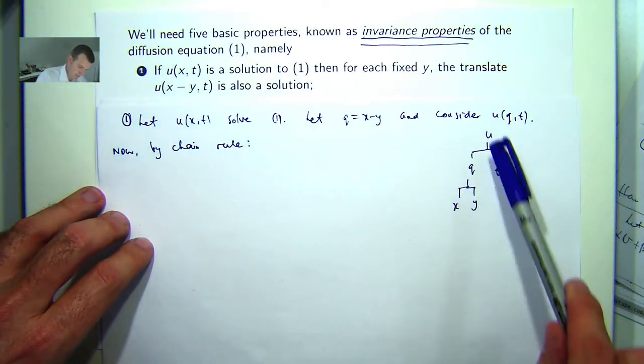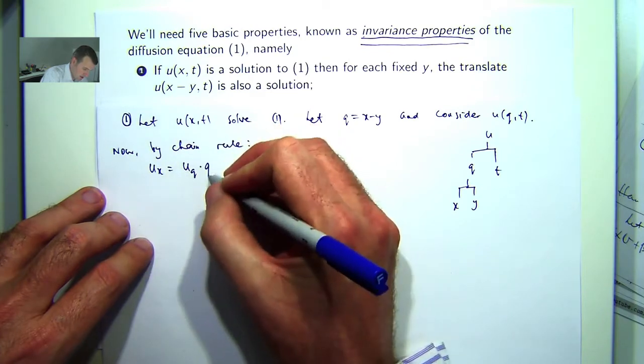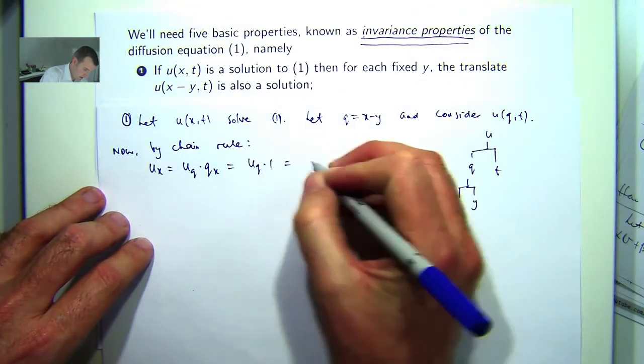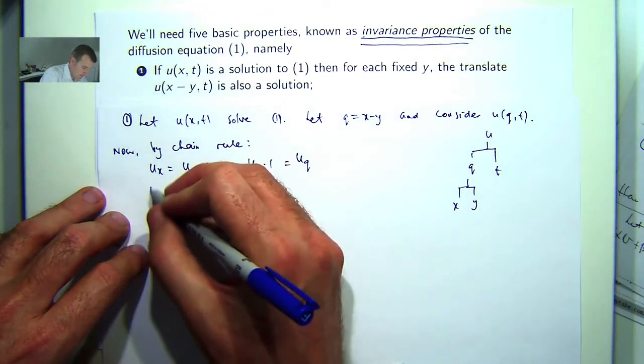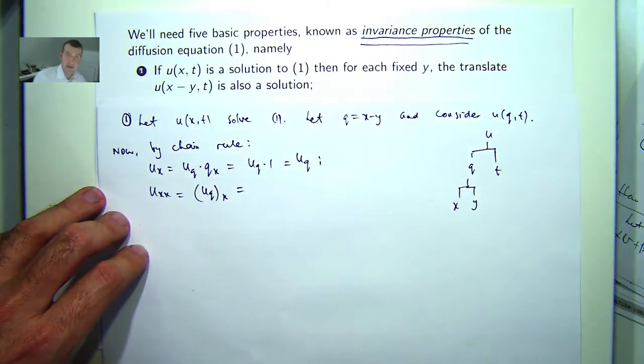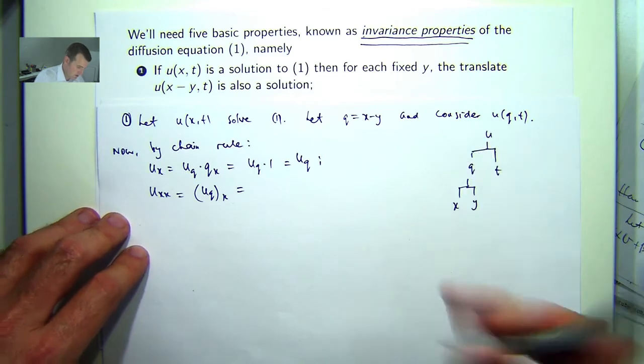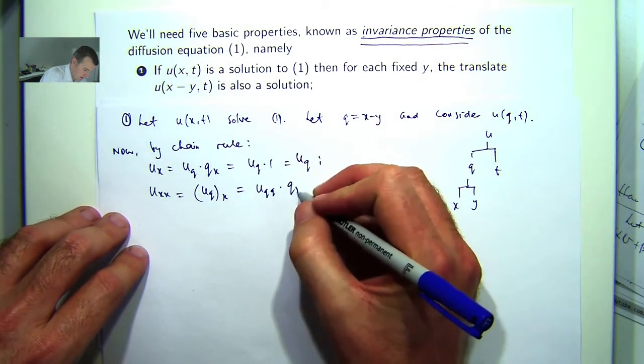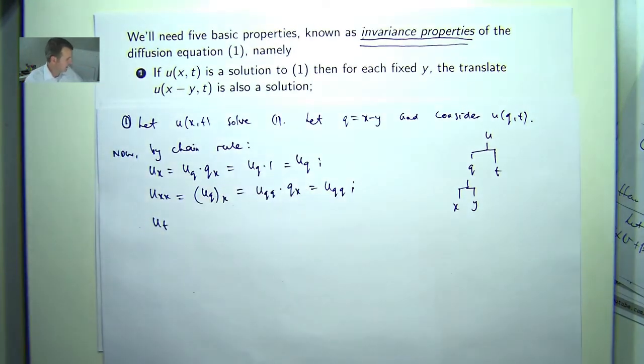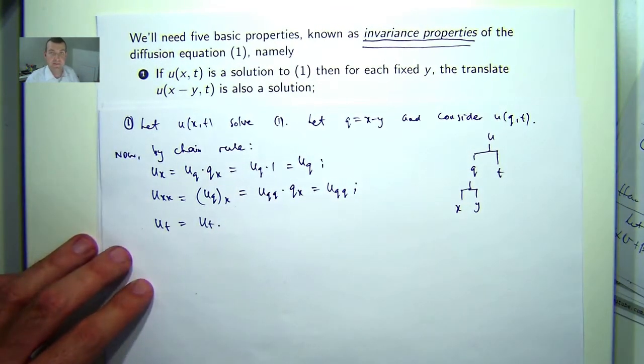Now if I write out my little chain rule to form the derivatives that we want to involve in our argument involving 1, then I can come up with the following. So u_x is just u_q times q_x. And q_x is just going to be 1, so u_q. So if I take that again and differentiate, then just basically replace u with u_q. So it's going to be u_qq times q_x. Well this is 1 again so we get u_qq. And the last derivative in our diffusion equation is u_t. Now that's actually not going to change at all.